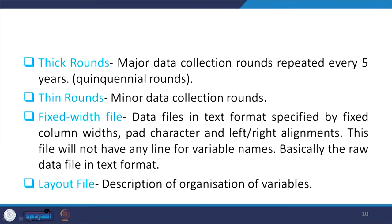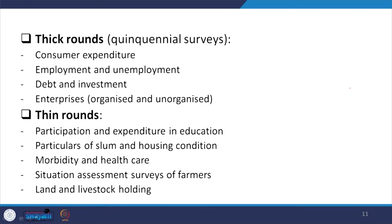Another file required is called the layout file. The layout file gives the description of the organization of variables — how variables are organized. In the thick round, as mentioned, it covers quinquennial surveys like consumer expenditure, employment, unemployment, debt and investment, and enterprises. In the case of thin rounds, it covers expenditure on education, particulars of slums and housing conditions, morbidity and healthcare, situation assessment of farmers, and land and livestock holdings.